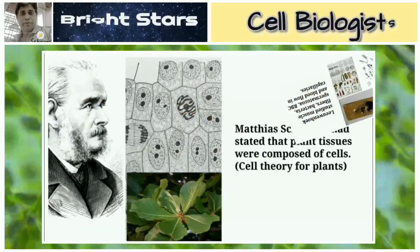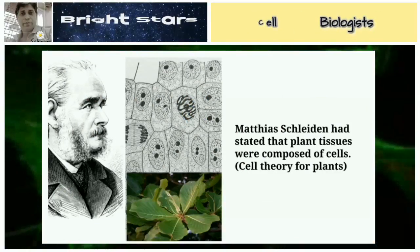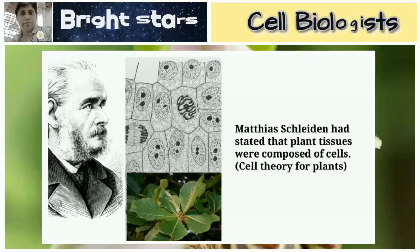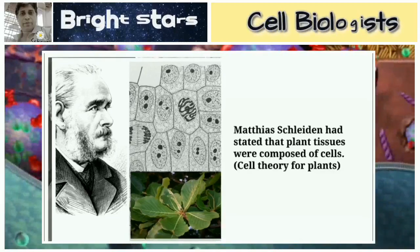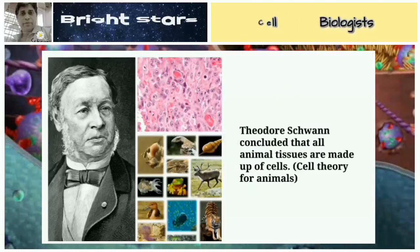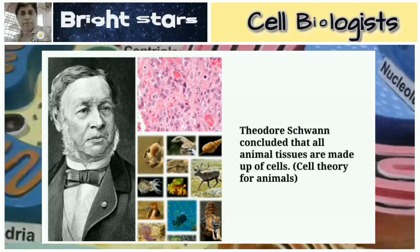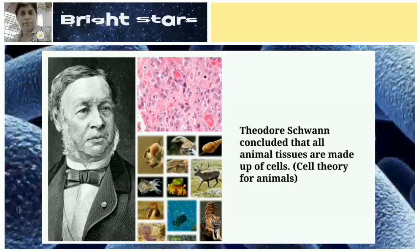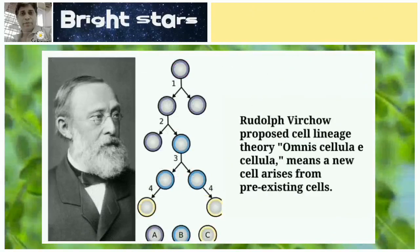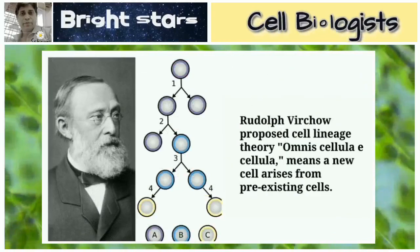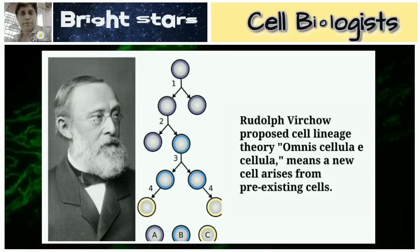Matthias Schleiden stated that plant tissues were composed of cells — that is, cell theory for plants was proposed by him. Schwann concluded that all animal tissues are made of cells, so cell theory for animals was proposed by him. Virchow proposed cell lineage theory: 'Omnis cellula e cellula,' meaning a new cell arises from a pre-existing cell.